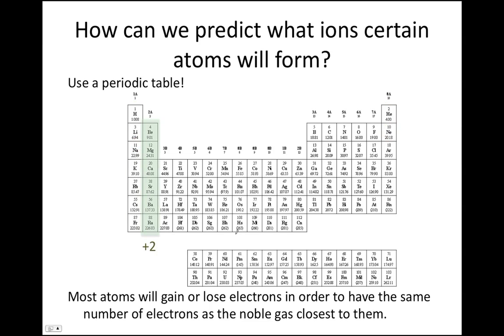Likewise, atoms in the second column of your periodic table will want to lose two electrons. And remember, because we're losing negative charge, we're forming more positive ions.